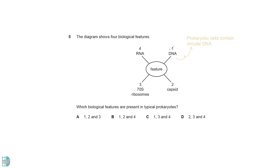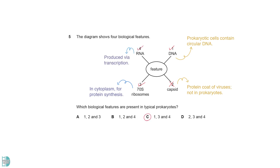Prokaryotic cells contain circular DNA, so one is correct. The capsid is the protein coat of viruses — it is not a feature of prokaryotes. They have 70S ribosomes which lie freely in the cytoplasm, allowing protein synthesis to occur. When they carry out transcription, RNA is formed.